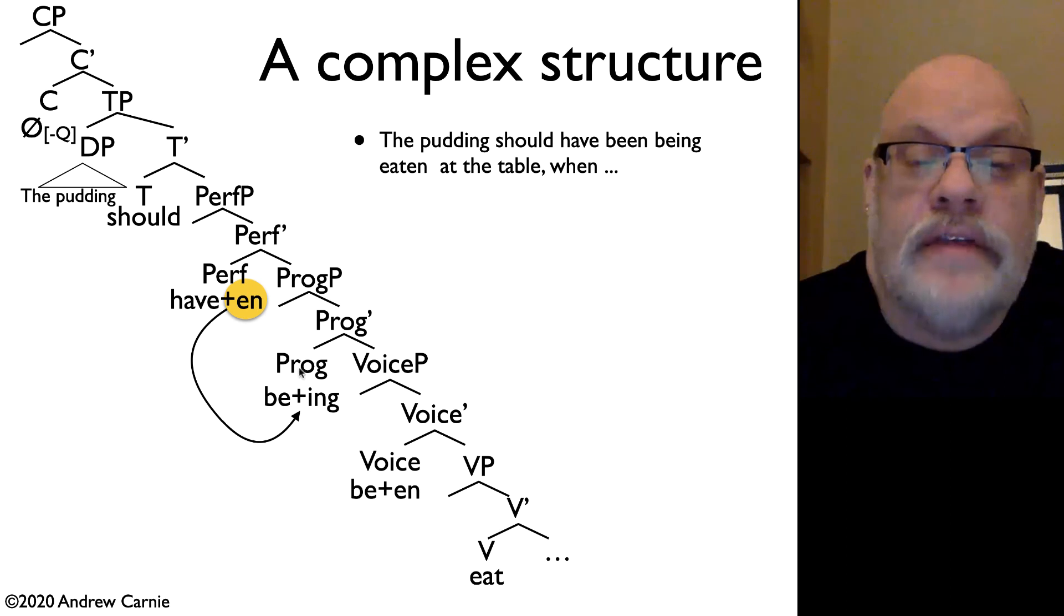The progressive is formed by be plus a gerund. So the be part stays here underneath the progressive, but the -ing actually has to appear one verb down. So the be, the first be marks the progressive, and the -ing on the following be marks the progressive. So we start with them together underneath the progressive head, and then we lower the -ing onto the lower be.